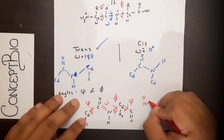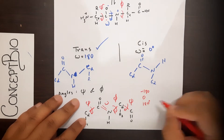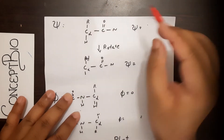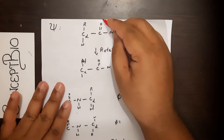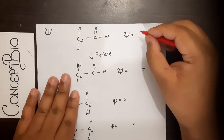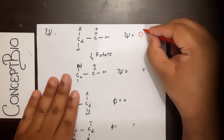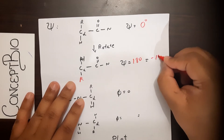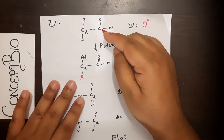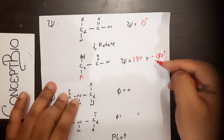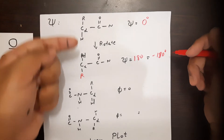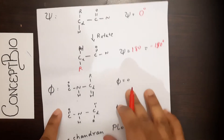Both phi and psi can range from minus 180 to 180 degrees. They can go in-plane and out-of-plane. For the psi angle, when the group is in this configuration it's 0 degrees; when the R group flips to the other end it's 180 or minus 180 degrees. Going clockwise gives positive 180; going counterclockwise gives minus 180 — both are the same.